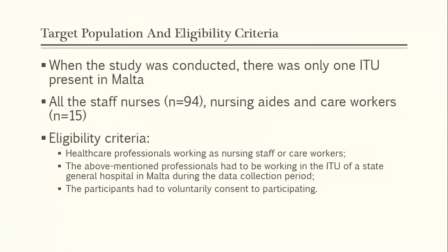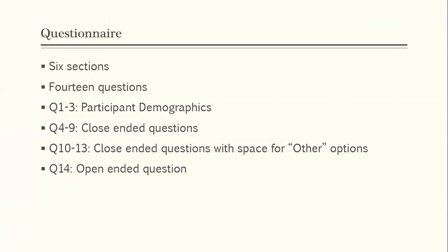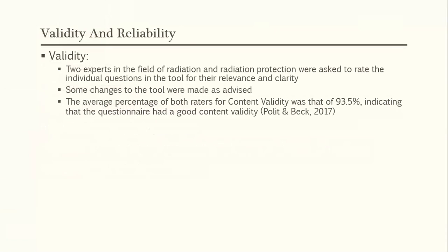The target population was all staff nurses, nursing aides, and care workers working in the ITU at the time of the study. The eligibility criteria were healthcare professionals who were nursing staff or care workers working in the ITU during the data collection period and who voluntarily consented to participate. The research tool was a self-designed questionnaire made up of six sections with a total of 14 questions. The questions were mainly closed-ended, however some left space for participants to write their own opinions, and there was one open-ended question. Before using the tool, validity and reliability testing were performed.